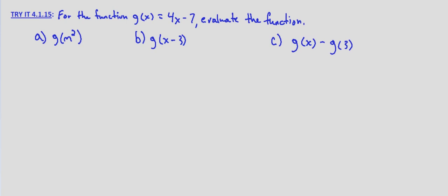So the first one, we're asked to evaluate the function g of x equals 4x minus 7 at g of m squared. So we literally just substitute m squared for any place that we have x and then simplify. So g of m squared equals 4 times m squared minus 7, and in this case we literally just remove the parentheses. g of m squared equals 4m squared minus 7.